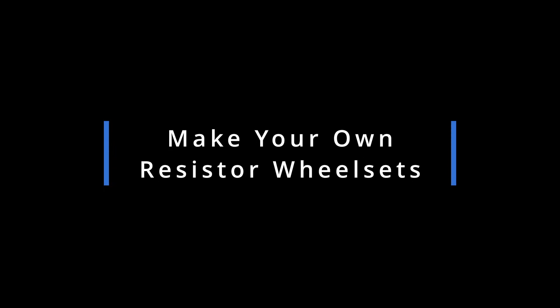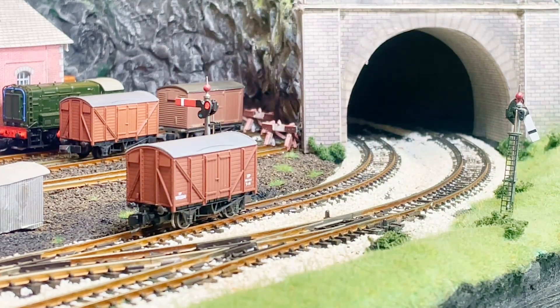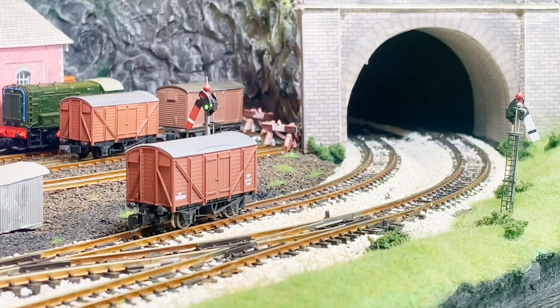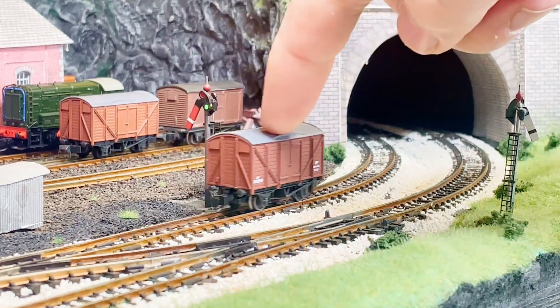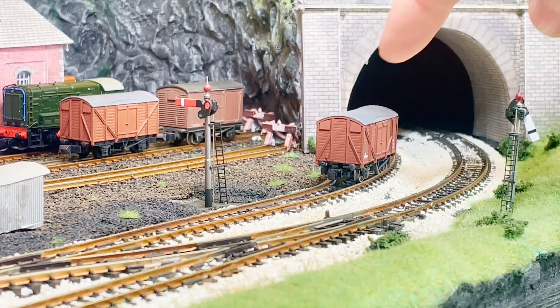In this episode we're going to make some resistor wheel sets for N gauge wheels, but this method will equally work for double O and HO wheels. So why do we need resistor wheel sets? Well, if you are using current sensing block detection, resistor wheel sets allow a wagon or a coach to be detected when in a block.